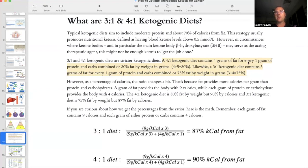However, a 3 to 1 ketogenic diet contains 3 grams of fat for every 1 gram of protein and carbohydrates. So a 3 to 1 ketogenic diet is slightly less strict in terms of protein and carbohydrates compared to a 4 to 1 diet.